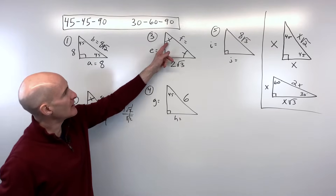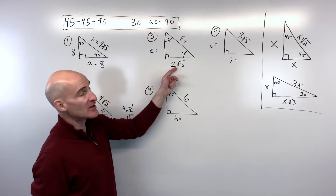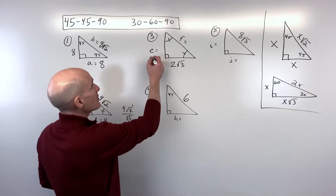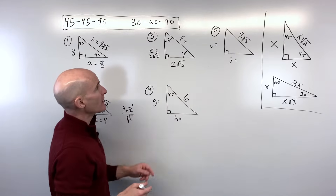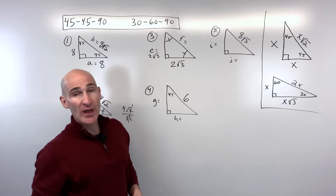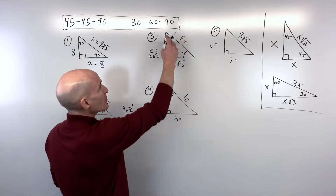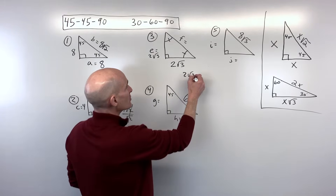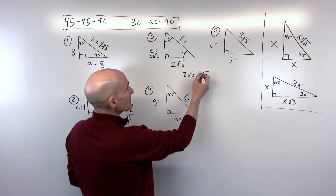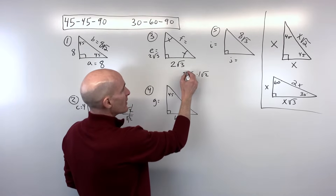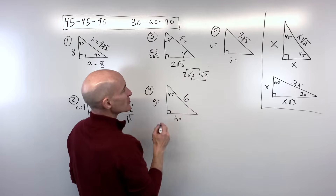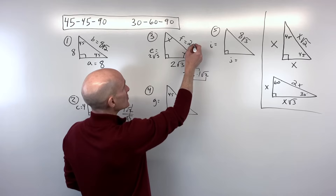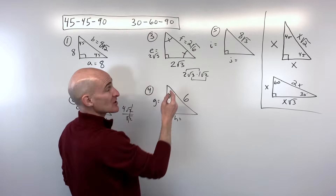For number three, same thing — 45-45-90 — and they're giving us a leg of 2√3. That means the other leg is also 2√3 since the legs are congruent. To get the hypotenuse, we multiply by the square root of 2. Taking 2√3 times √2: multiply the integers together and the square roots together — 2 times 1 is 2, √3 times √2 is √6 — giving a hypotenuse of 2√6.